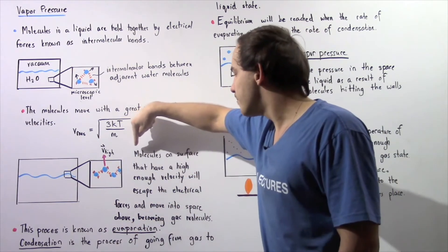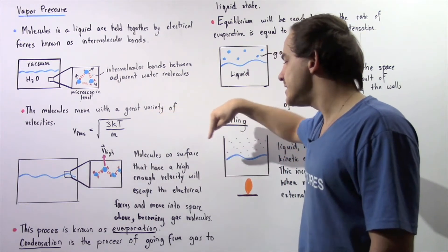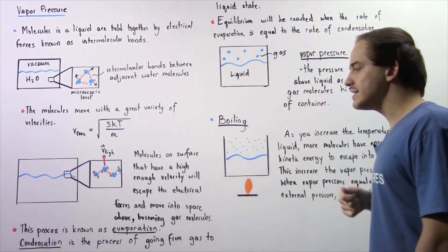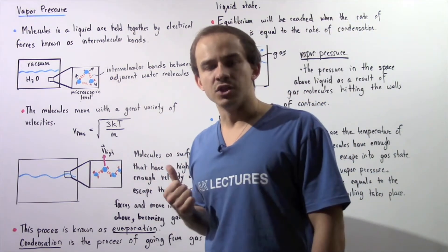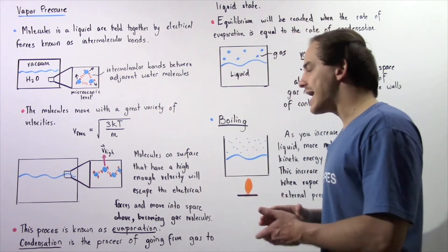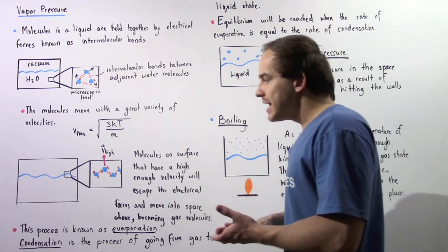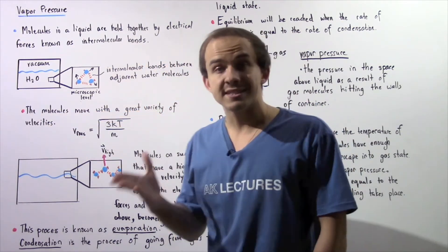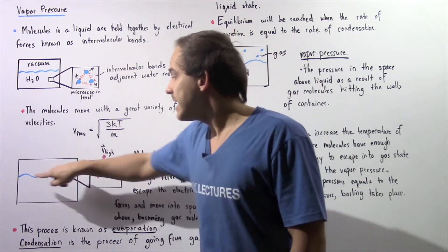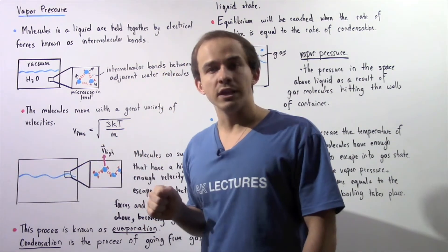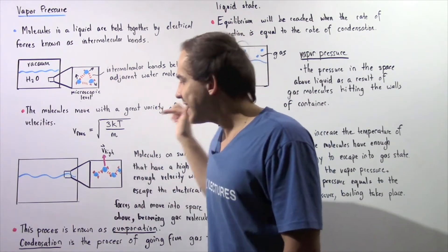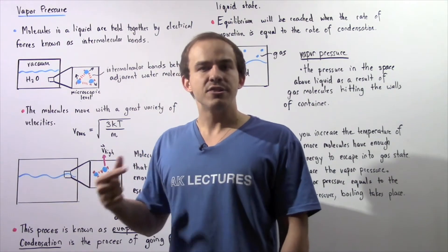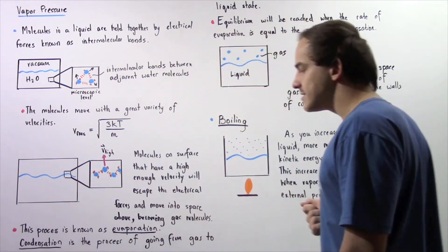Molecules on the surface that have high enough velocity will escape the electrical forces and move into the space above, becoming gas molecules. This process is known as evaporation. These evaporated gas molecules will fly about the empty space, and some of them will hit the surface of the liquid. Some of these molecules that hit the liquid surface will remain in the liquid, and this process is known as condensation.